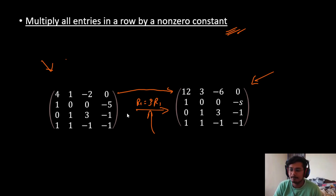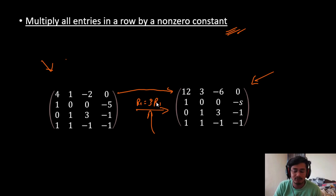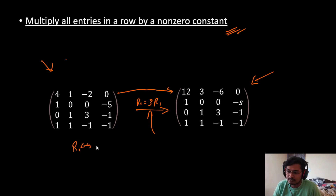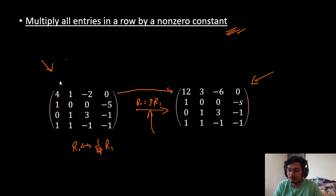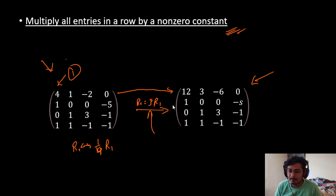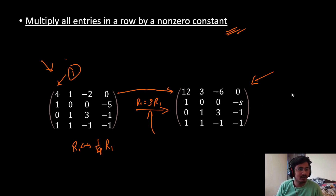In the same way, we can also divide any row by a constant and that will also not affect the matrix at all. For example, I can divide the first row by 4 — this will not affect the matrix but we will get a leading position of 1, which in many cases we need when studying row echelon form. So we can multiply or divide by any constant and that will not affect the matrix at all.